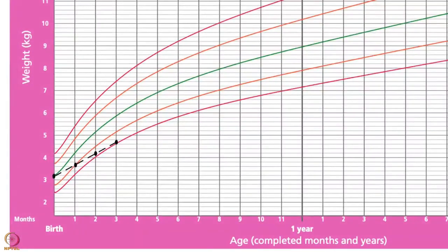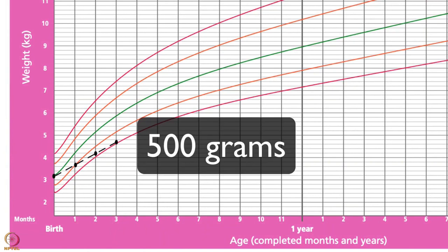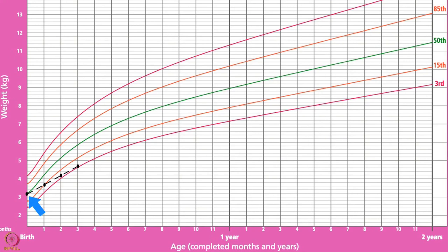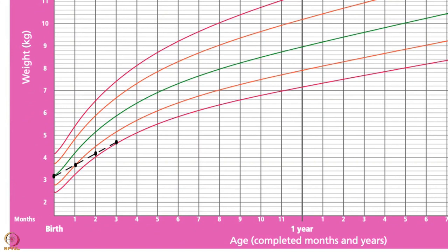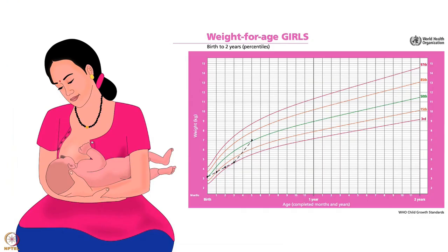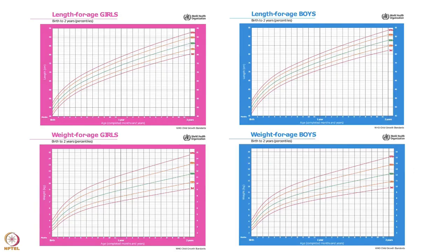Another problem is slow growth. Pooja's average weight gain is only 500 grams per month. Her birth weight was average at the 50th percentile line. However, we can see that she became undernourished in just 3 months. She needs effective breastfeeding to come back to the 50th percentile line. Please follow the growth chart to evaluate a child's growth and take adequate measures if the growth falters for any reason.